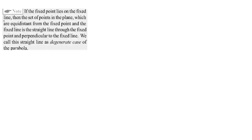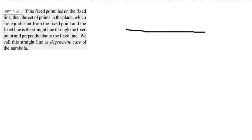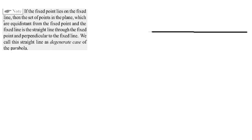Hi friends. Now I'll explain the case where a fixed point lies on the fixed line. If I consider a fixed point and a straight line which has a fixed point on it, then the set of points which are equidistant from this fixed point and the fixed line — the perpendicular distance to the fixed line — so this is the fixed line and this is the fixed point.